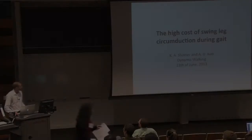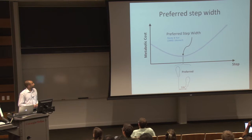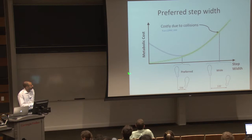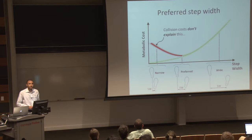When people walk normally, they end up with a preferred step-width that minimizes metabolic cost. If you increase that step-width, you increase metabolic cost primarily due to collisions. If you want to minimize the cost due to these collisions, you should reduce your step-width. But once you drop below your preferred step-width and start walking with narrow gaits, you see an increase in metabolic cost as well, and collisions don't do a good job of explaining why this is.